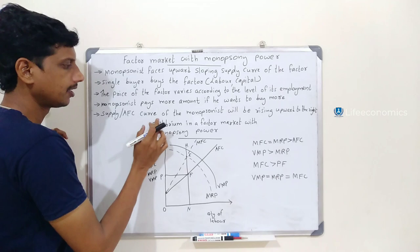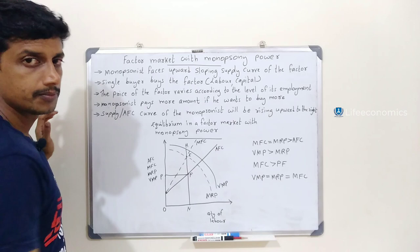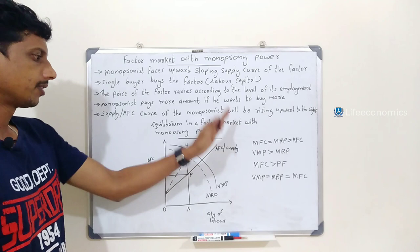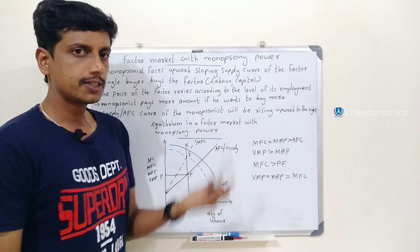Supply is the average factor cost curve of the monopsonist, and it will be rising upward to the right. This is the AFC curve. The AFC curve will rise up as we move along the model. This is the factor market with monopsonist power.